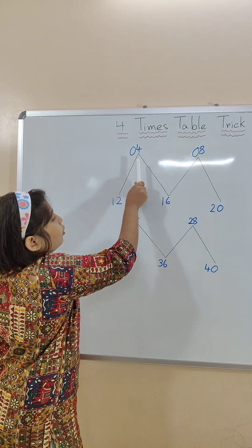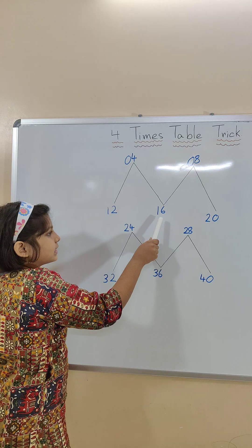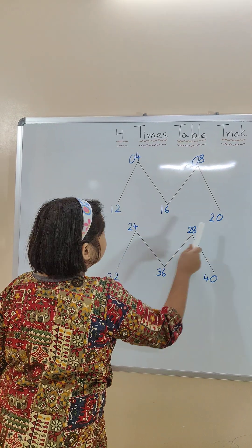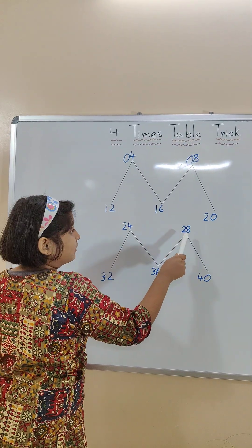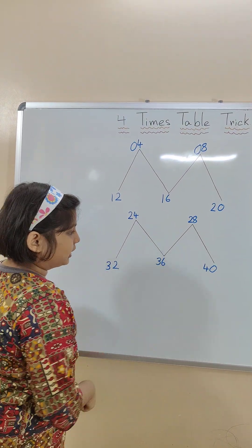Let's read with me. 4 ones are 4, 4 twos are 8, 4 threes are 12, 4 fours are 16, 4 fives are 20, 4 sixes are 24, 4 sevens are 28, 4 eights are 32, 4 nines are 36, 4 tens are 40.